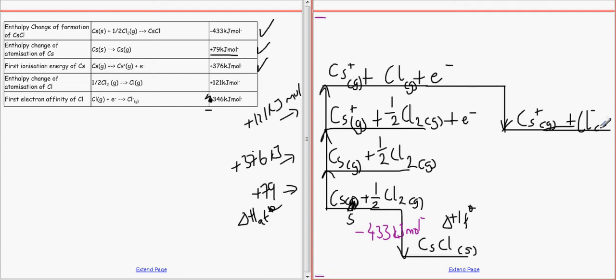So these two will join together in a lattice enthalpy reaction, and it will form CsCl as a solid.